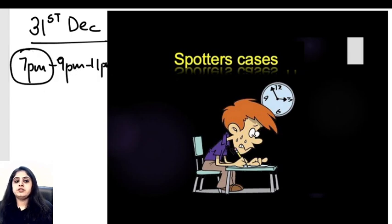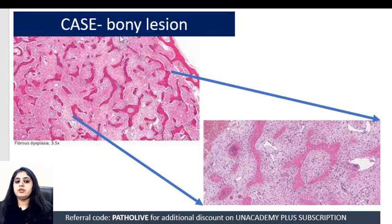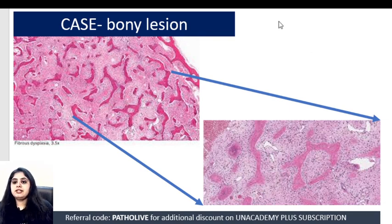Beginning with the first one of the day, which happens to be a bony lesion. I've shown you the lower magnification and the higher magnification of the same. When discussing a bony lesion, I have to concentrate on the bony trabeculae. For those who got it right — amazing — this is a case of fibrous dysplasia.